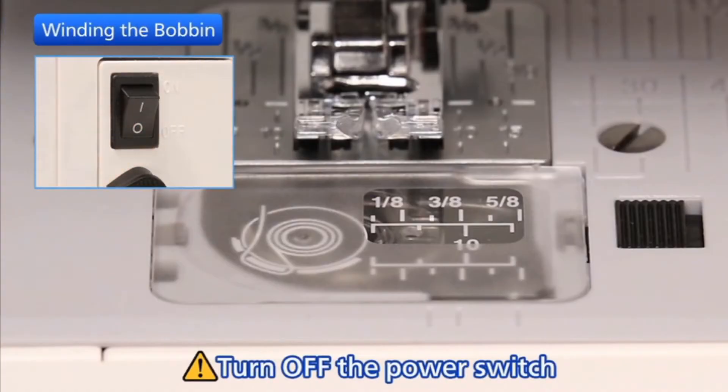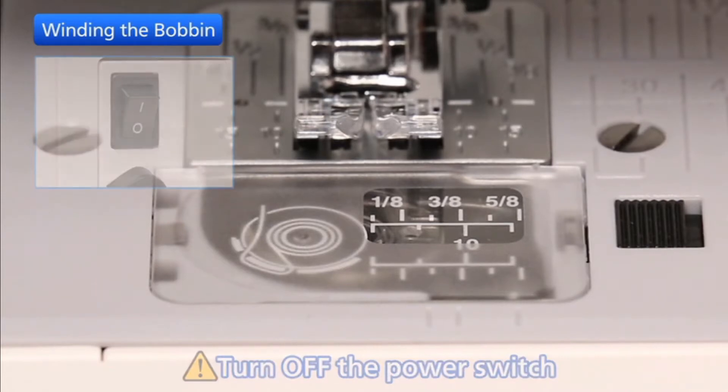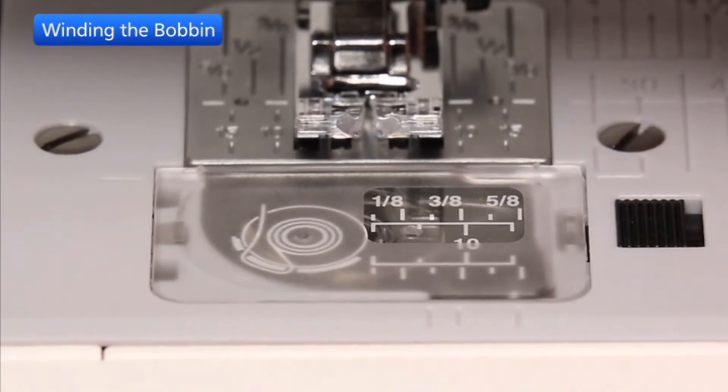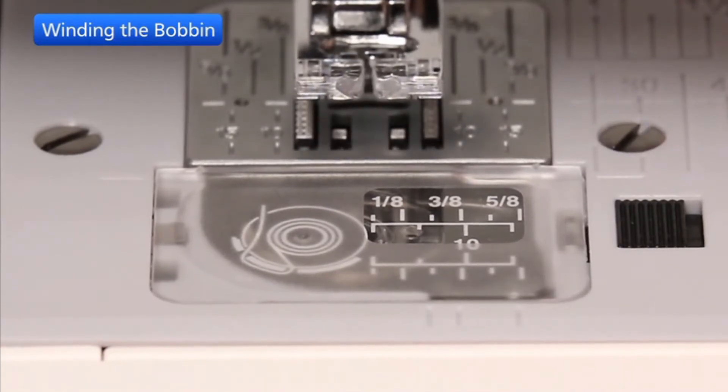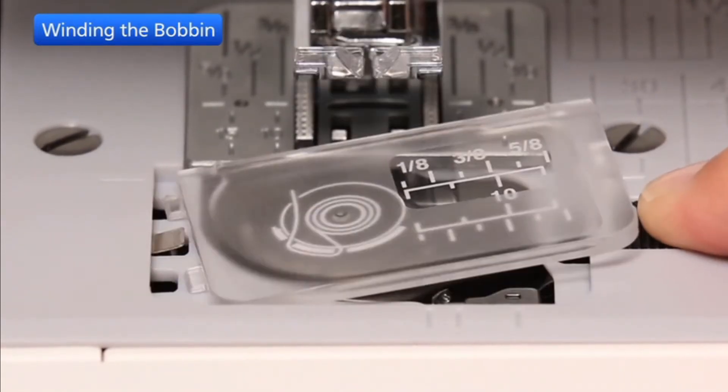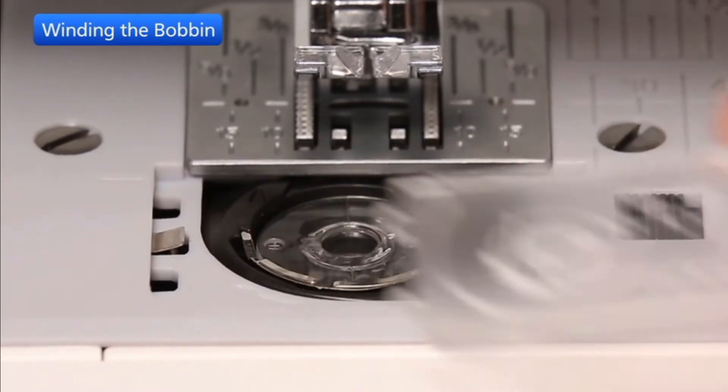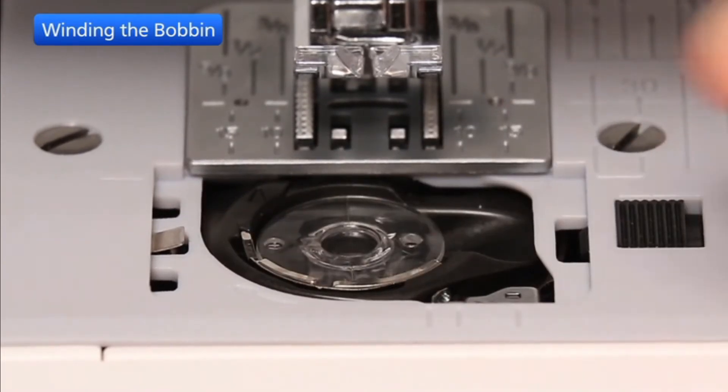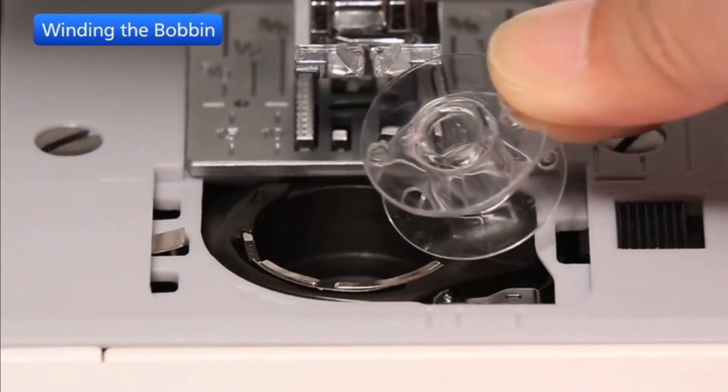Turn off the power switch before removing the bobbin. Gently slide the hook cover release button to the right and remove the hook cover plate. Lift out the bobbin.